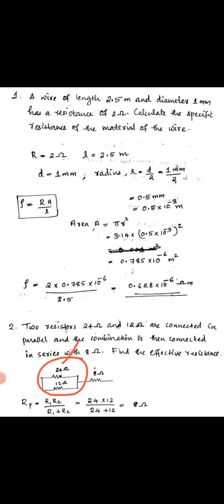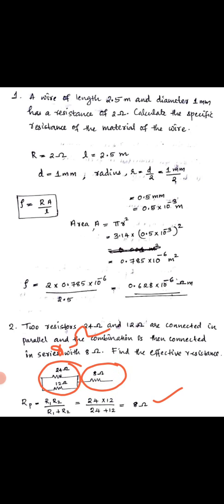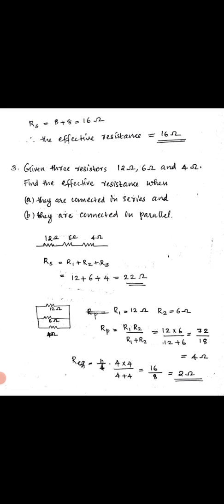For the parallel connection, the effective resistance Rp = R1 into R2 divided by R1 plus R2. Substituting: Rp = 24 into 12 divided by 24 plus 12 = 8 ohm. This 8 ohm parallel result is then connected in series with the 8 ohm resistor. The total effective resistance = 8 plus 8 = 16 ohm.